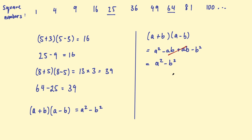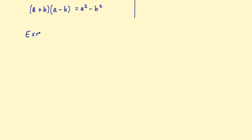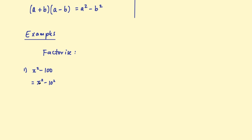Let's look at some examples where this is useful. You'll often be given an expression to factorize. You can use the difference of two squares to factorize and in some cases simplify algebraic expressions. So you might be asked to factorize x squared take 100. A common question is: how can I factorize this? There are no common factors. Here you need to use the difference of two squares and notice that x squared take 100 can be written as x squared take 10 squared. We have a square number take another square number, so we can write this as (x + 10)(x − 10).